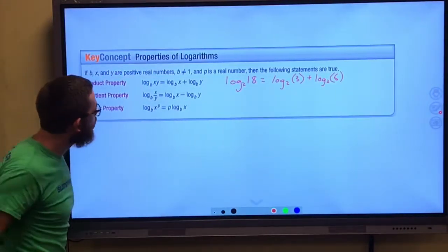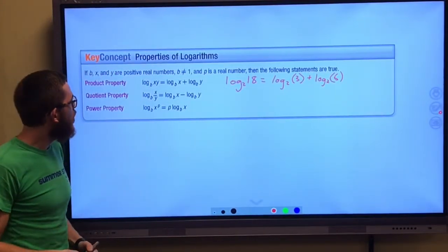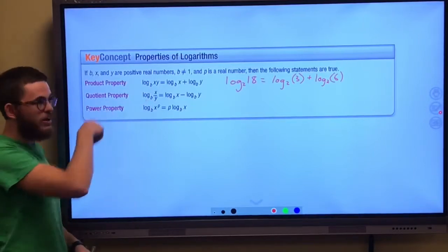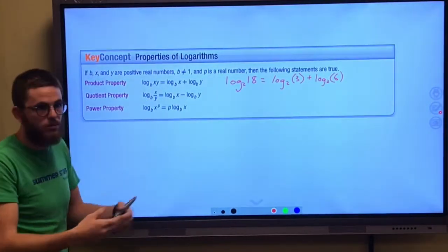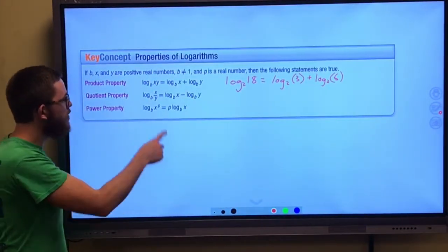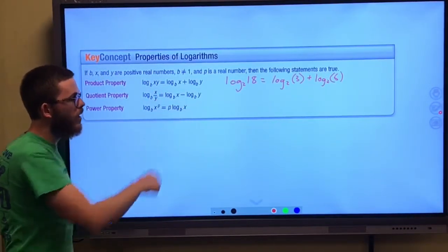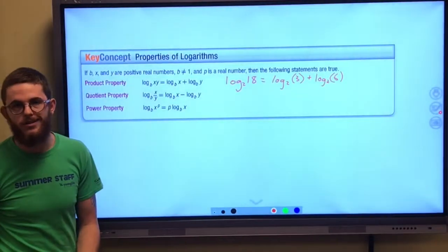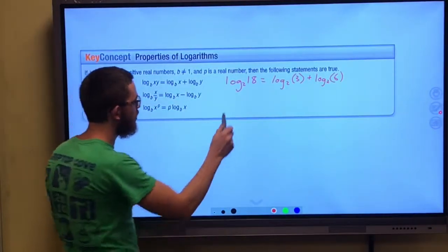Moving on, log base b of x divided by y. Notice that is division, that is a quotient. We get a quotient when we divide. So this is the same thing as the log of that same base of the numerator minus log of the base of the denominator.